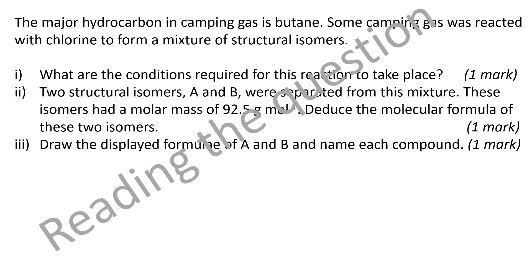The first thing to do is to read the question. It tells you that butane reacts with chlorine to form a mixture of structural isomers, and it asks what are the conditions required for this reaction to take place. The only way that butane can react with chlorine is using free radical substitution, so therefore you'd be looking at UV light.